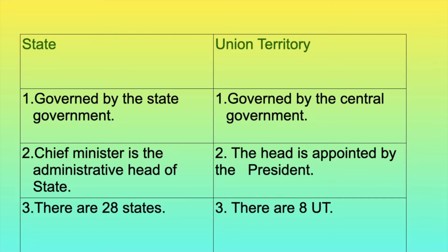The differences between state and union territory: A state is governed by the state government, while a union territory is governed by the central government. A state's chief minister is the head of the state, while the head of a union territory is appointed by the president. There are 28 states and 8 union territories.